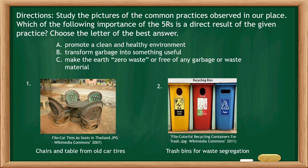Let's try another activity. Directions: Study the features of the common practices observed in our place. Which of the following importances of the five Rs is a direct result of the given practice? Choose the letter of the best answer. A: Promote a clean and healthy environment. B: Transform garbage into something useful. C: Make the earth zero waste or free of any garbage or waste material. Number 1: Chairs and tables made from old car tires. The answer is B — Transform garbage into something useful.